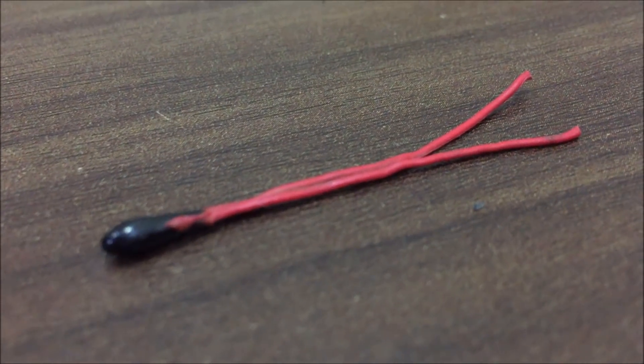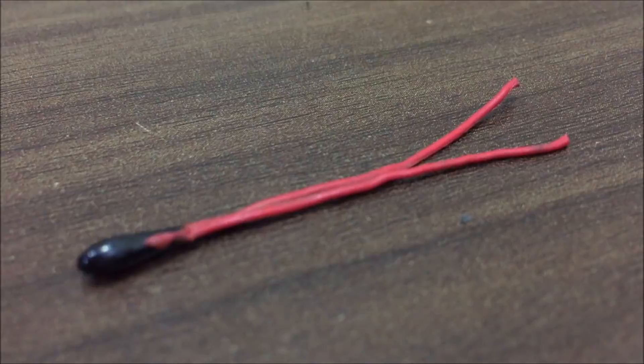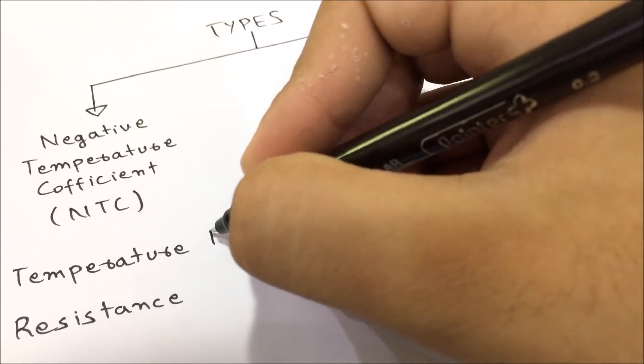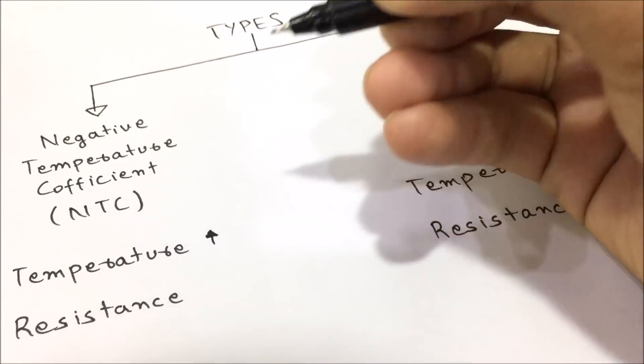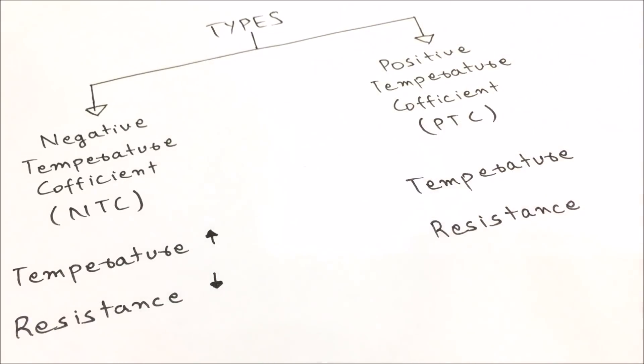When it comes to temperature sensing, you always need the thermistor. There exist two types of thermistor. One with negative temperature coefficient and one with positive temperature coefficient. In case of negative temperature coefficient, when the temperature increases, the resistance decreases.